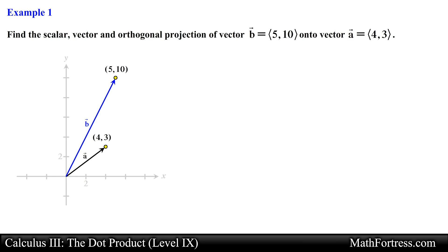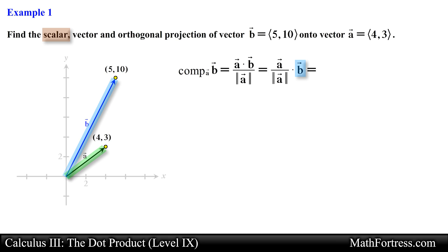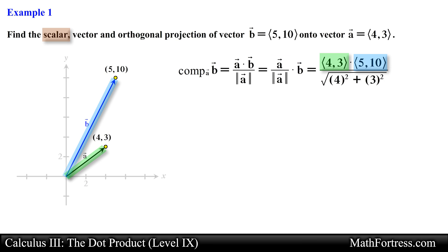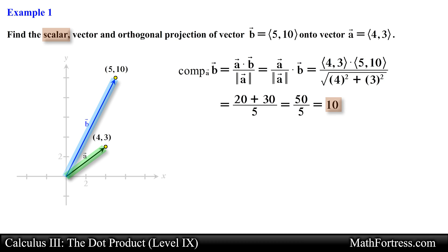Let's first find the scalar projection of vector b onto vector a. Recall that this is nothing more than the dot product between vector b and the unit vector in the direction of vector a. So we substitute the vectors into the expression and find the magnitude of vector a. Simplifying the expression, we obtain 10 for the scalar projection.